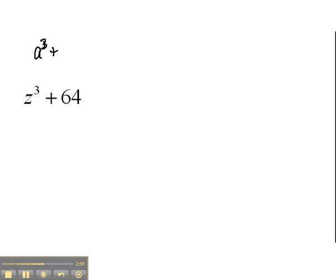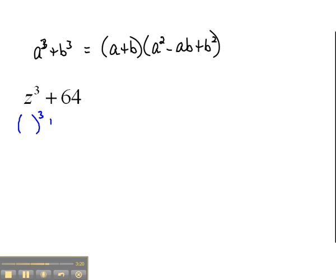But, our pattern said, if we have a cubed plus b cubed, that will factor into a plus b times a squared minus ab plus b squared. So, I'll write that again where we can see that as we go. So, again, it would be really nice if we could see exactly what's being squared, or cubed, rather.